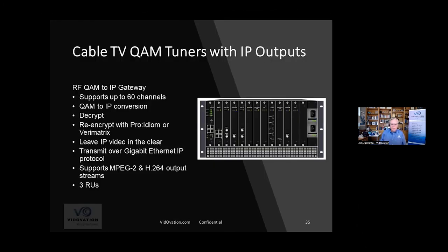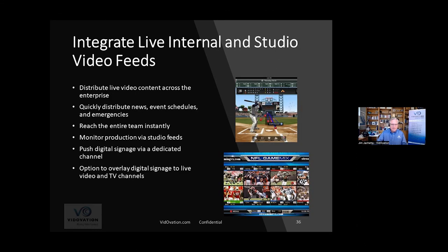In the case of cable TV, we have a QAM-to-IP appliance that's four rack units high and can bring in 60 channels. In the way that the COM 3000 tunes 120 channels of DirecTV, this is not quite as dense but can do up to 60 channels of cable TV. You feed RF QAM in the back of it and it spits out IP — compatible with Proidiom, Verimatrix, and the decryption cards that the cable industry uses.